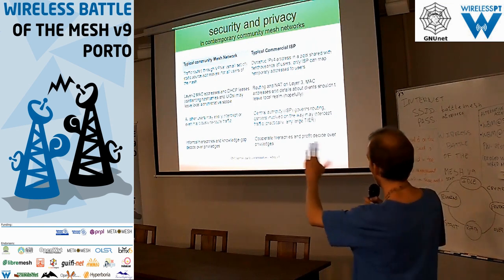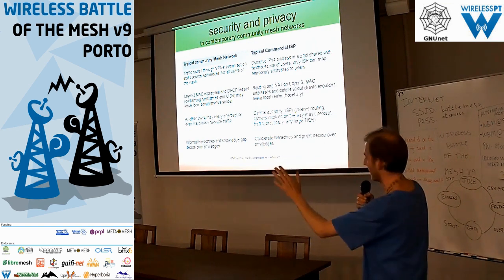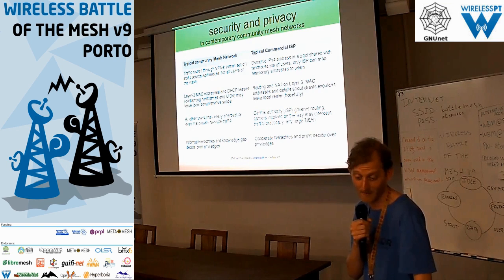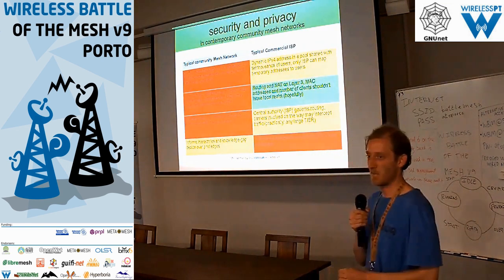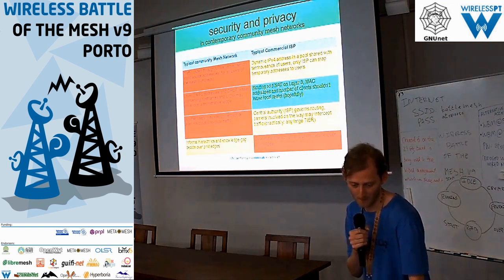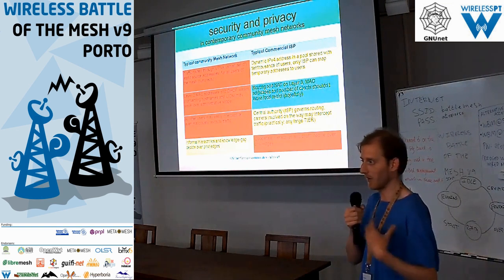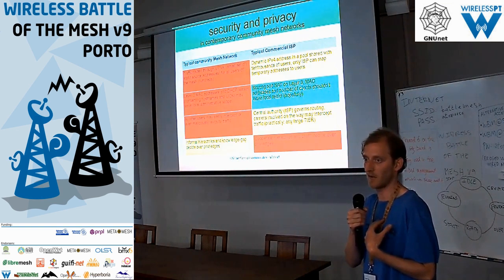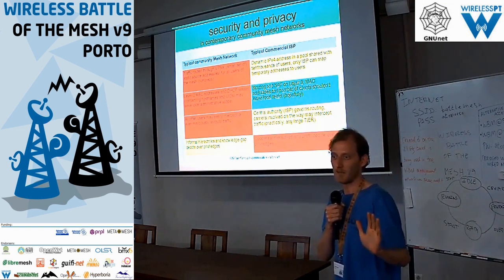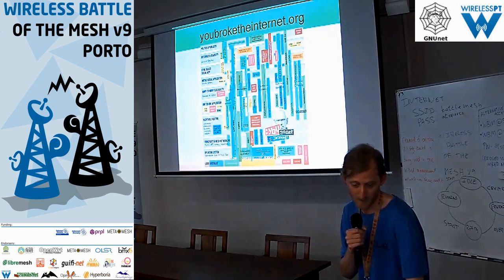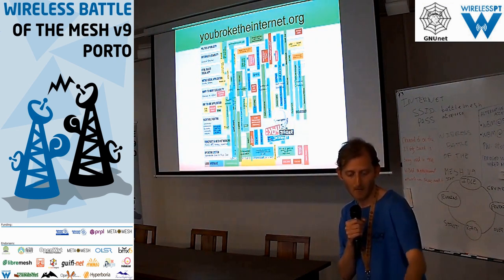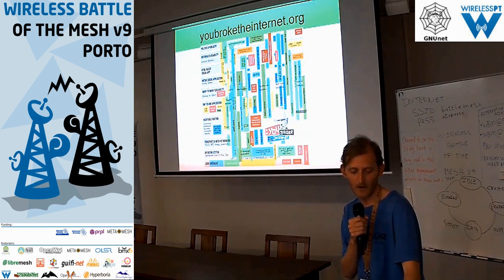So why should we be bothered as community networks? We might say these are problems all over the internet — not my department. But there was an effort to map all typical internet technologies and their implications for privacy and security at 'youbroketheinternet.org.' You can see a huge poster showing all types of technology. We are here — OpenWrt, Libre. The routing protocols like Batman and others are very easy to infiltrate, monitor, or maliciously manipulate, while BMX7 at least has some security.